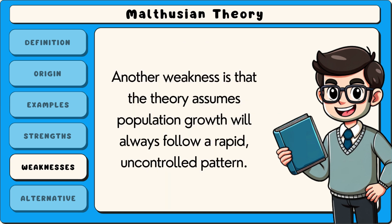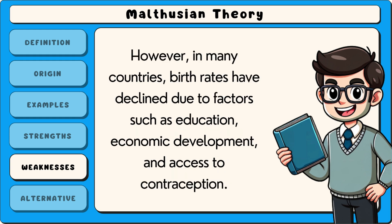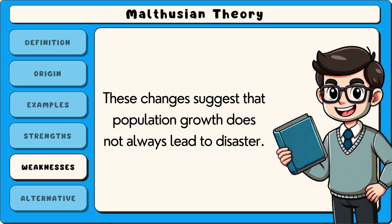Another weakness is that the theory assumes population growth will always follow a rapid, uncontrolled pattern. However, in many countries, birth rates have declined due to factors such as education, economic development and access to contraception. These changes suggest that population growth does not always lead to disaster.